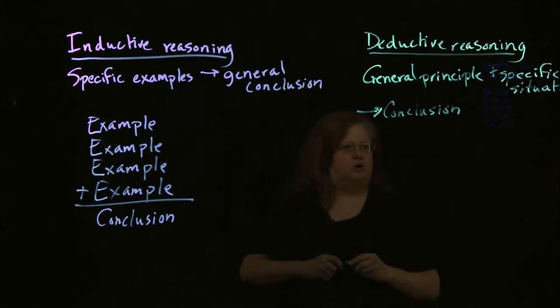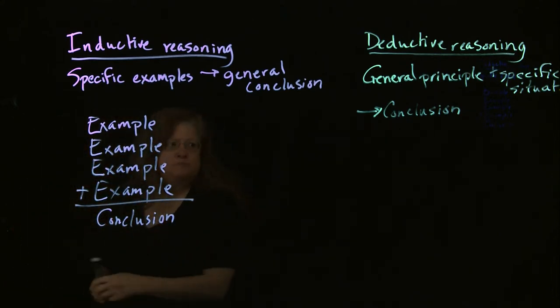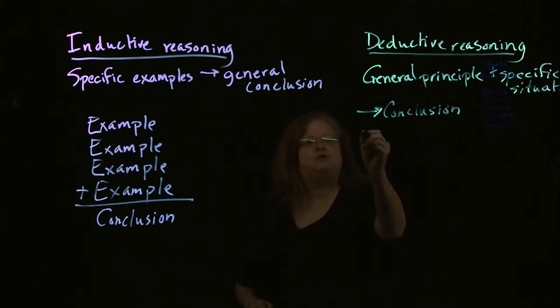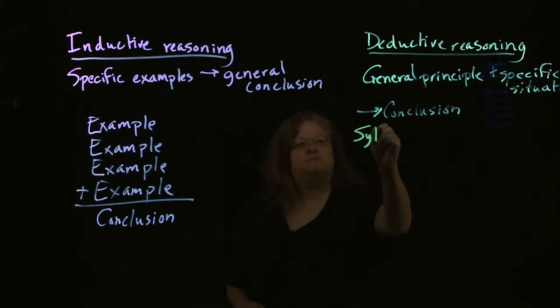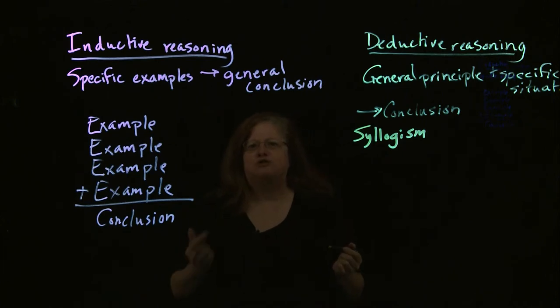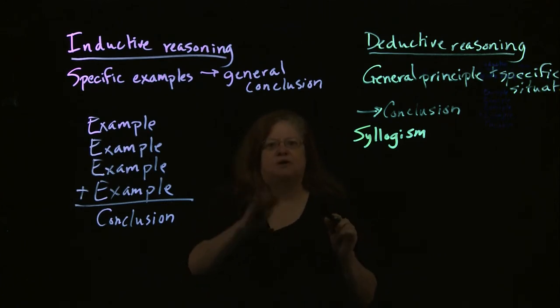When you're doing deductive reasoning, it's more mathematically certain. The chief element of deductive reasoning is known as the syllogism, and the syllogism has a very specific mathematical kind of structure. If you've ever taken a math class like geometry where you have to do proofs, that's basically what a syllogism is. It's a mathematical type of proof. The formula for a syllogism is going to seem a bit abstract at first, but it'll come clear in a minute.